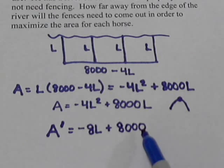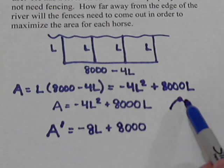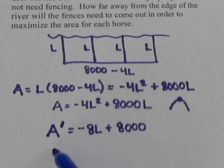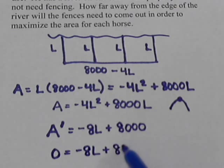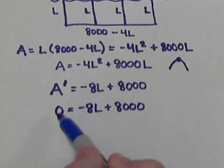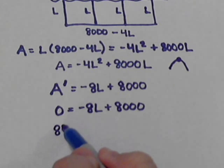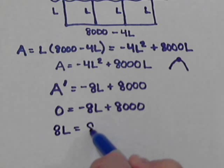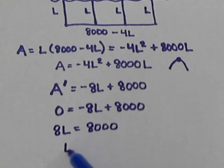So there's the equation for the derivative. And we know that at a critical point, the derivative is 0. So we're going to replace that with 0. So we have 0 equals negative 8L plus 8,000. And solve this. We move the 8L to the left. So we have positive 8L equals 8,000. And divide by 8.